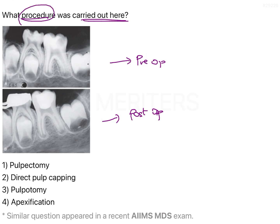What we see in these images is that this tooth is a young permanent tooth. This is most likely to be the first permanent molar, or the sixth. What we can appreciate is that there is a carious involvement with this sixth which is very close to the pulp canals.